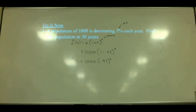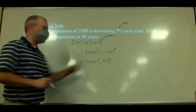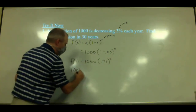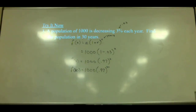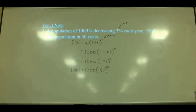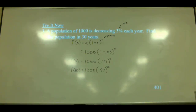We evaluate f(30) = 1000 times (0.97) to the 30th power. The answer is about 401.007 — so rounding to the nearest whole person, that's 401 people. Even at only 3% decrease per year, over 30 years that's a significant reduction. The formula is the same each time.